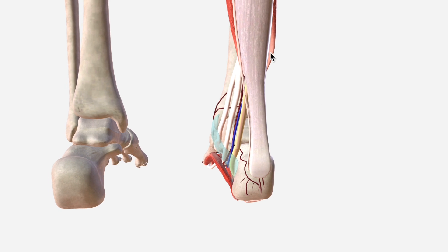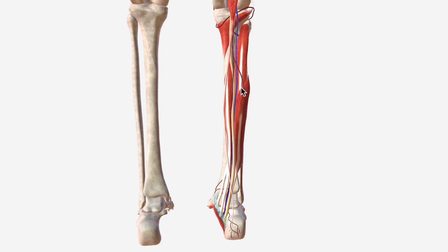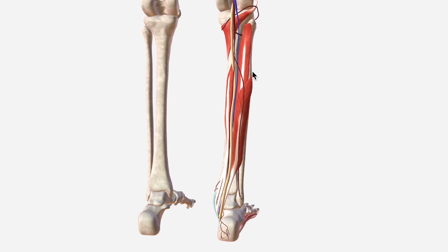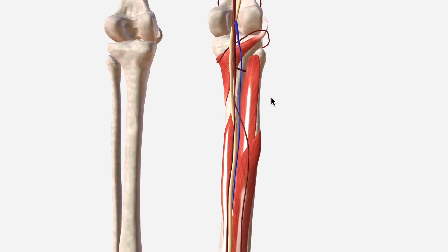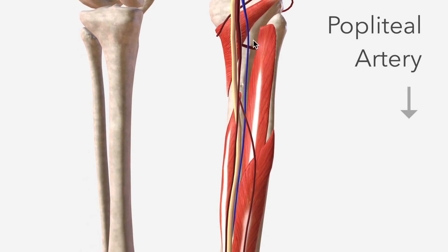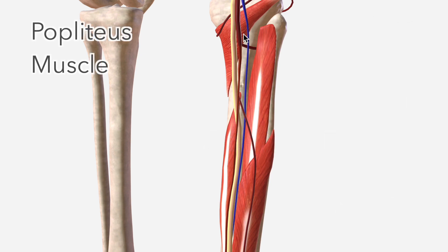Let's take another step back and remove gastrocnemius, soleus, and plantaris so that we can see how these three structures — the posterior tibial artery, vein, and the tibial nerve — are pretty closely related through the entire way down in the posterior compartment of the leg. One final thing to mention is how the bifurcation of the popliteal artery into anterior and posterior tibial arteries occurs at the inferior border of the popliteus muscle — just in case that's useful for your exams.